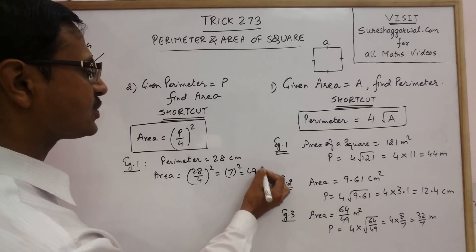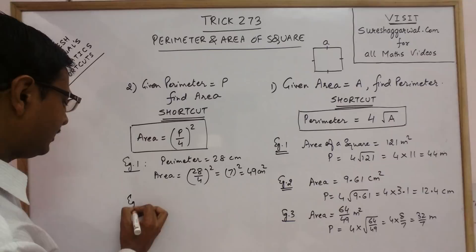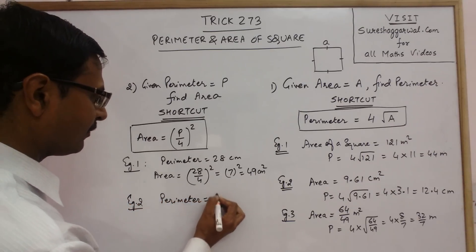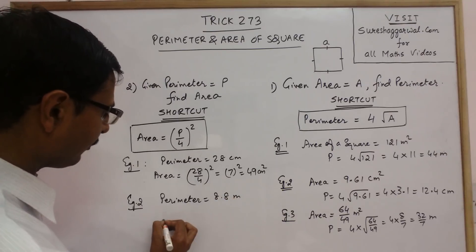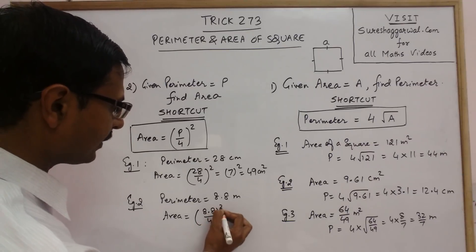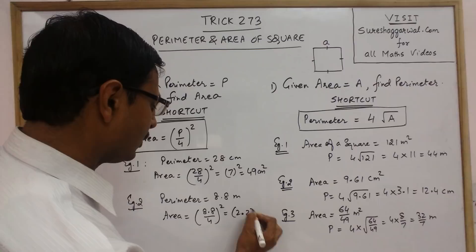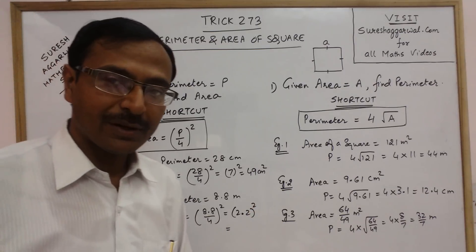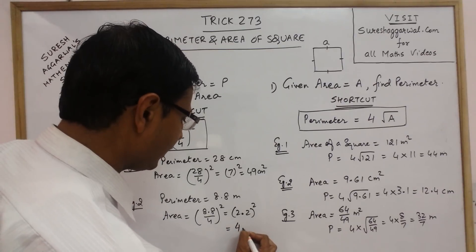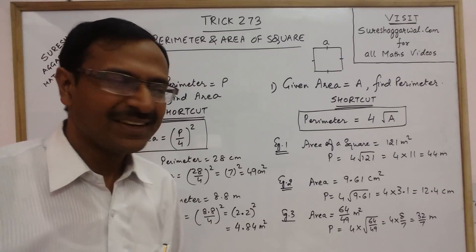Let us take one more example. Say we have perimeter as 8.8 meters. Now find the area: 8.8 upon 4, whole square. So 8.8 divided by 4 is 2.2, whole square. If you remember the square of 22 is 484, so 4.84 meter square is the area of this square.